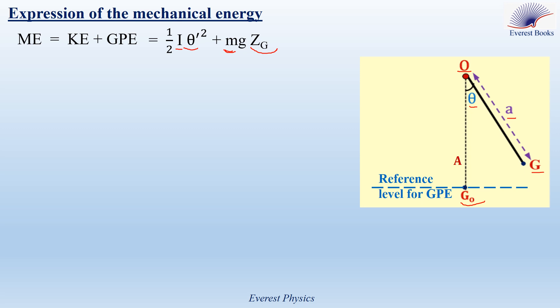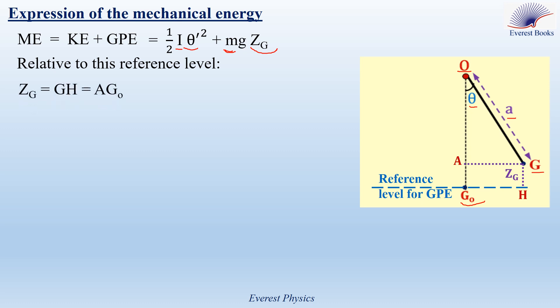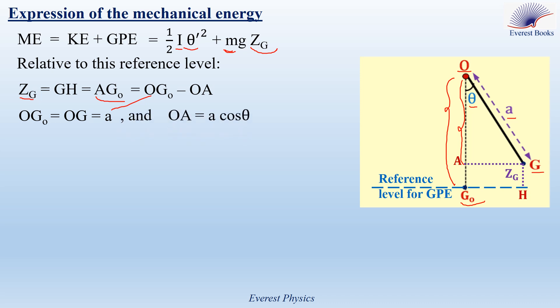In our example, the reference level for gravitational potential energy is the horizontal plane passing through G0. Relative to this reference level, Z of G is equal to GH, or equal to AG0. We need to determine the expression of Z of G, or AG0. From the figure, AG0 is equal to OG0 minus OA. But OG0 is equal to OG, which is equal to A. Now, considering the triangle OGA, cosine theta equals the adjacent OA over the hypotenuse A, so OA is equal to A cosine theta.